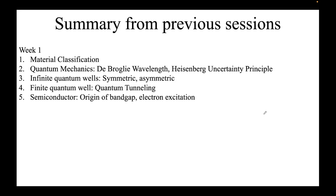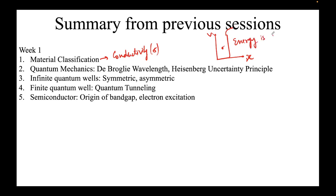A quick summary of what we've been talking about: in the first week we talked about material classification in terms of electrical conductivity, then we moved to basics of quantum mechanics like the de Broglie wavelength λ = h/p, Heisenberg's uncertainty principle, and we saw what a quantum well is — symmetric and asymmetric — where a particle is trapped and its energy is quantized.